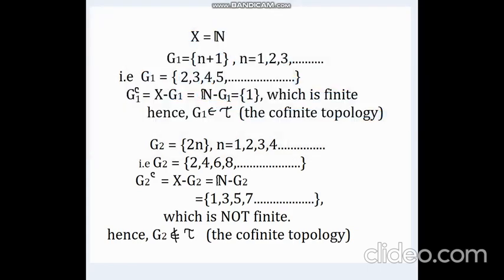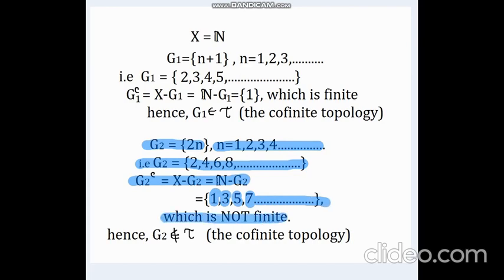Well, now let us take another set to get an example of a non-co-finite set. Let G₂ be the set {2n}, where again n ranges from 1 to infinity. That is the set G₂ consists of all even positive integers. Now as we can see, the complement of G₂ is the set {1, 3, 5, 7, and so on}. That is the set of all odd positive integers, which is not finite. So G₂ does not belong to co-finite topology.